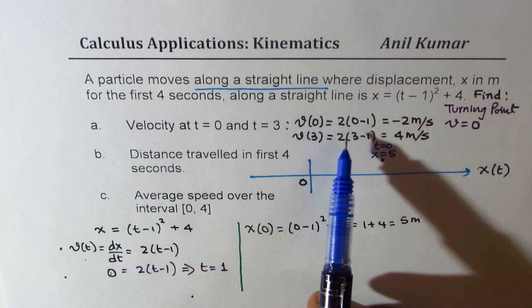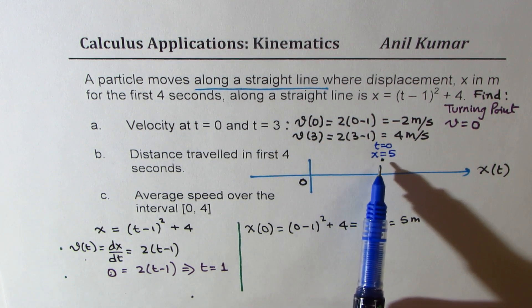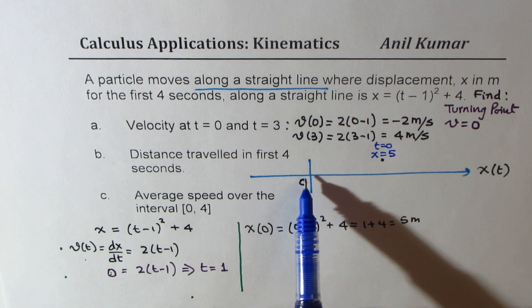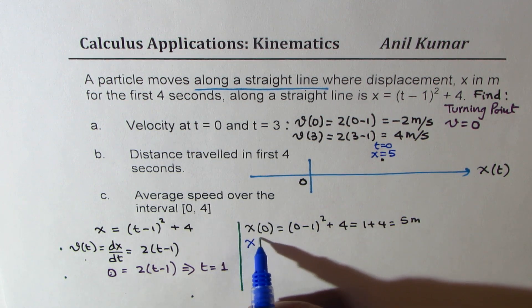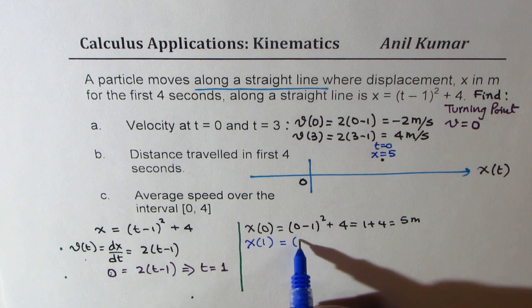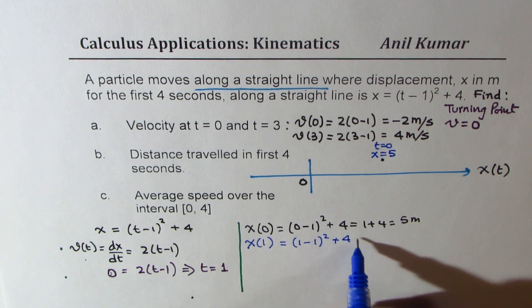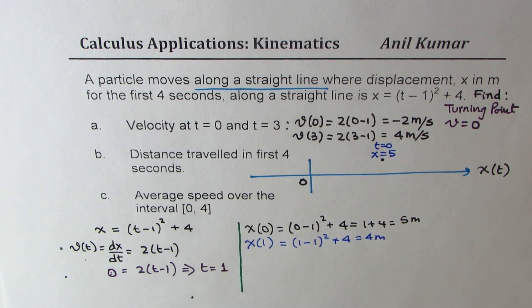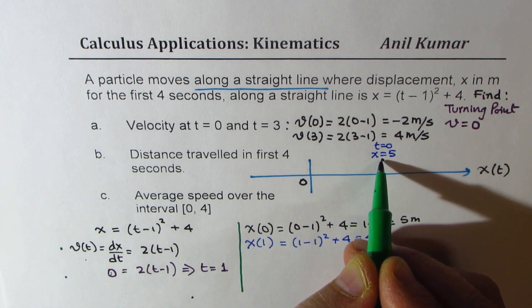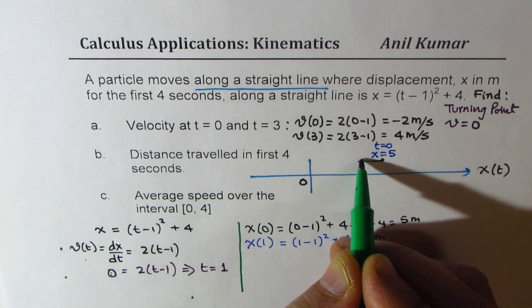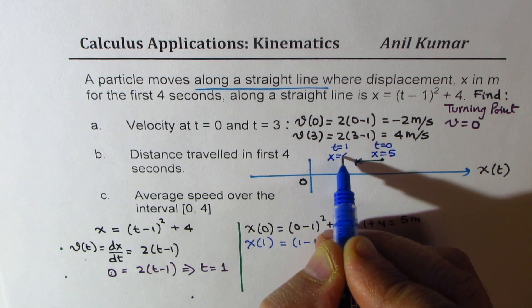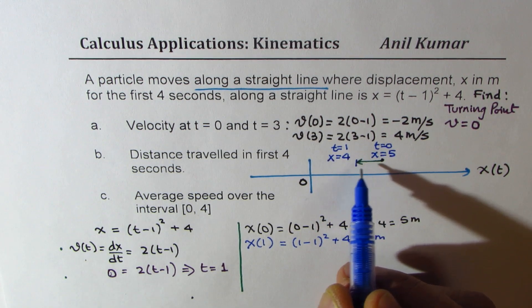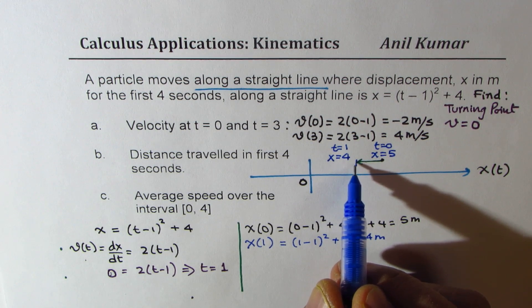The velocity is negative at the turning point, meaning the object is moving towards the reference frame. At t equals 1, substituting into the formula gives 1 minus 1 whole square plus 4, which equals 4 meters. So the object has moved 1 unit to the left — in that one second the object has moved 1 meter.